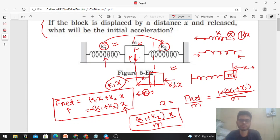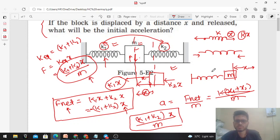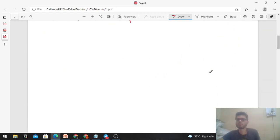So you can directly find out the K equivalent. K equivalent is if you replace the two springs by a single spring. At that time, the equivalent spring constant will be K1 plus K2. Then, if you displace it by some distance X, the force will be K equivalent into X, which is K1 plus K2 into X, divided by the mass to get the value of acceleration.